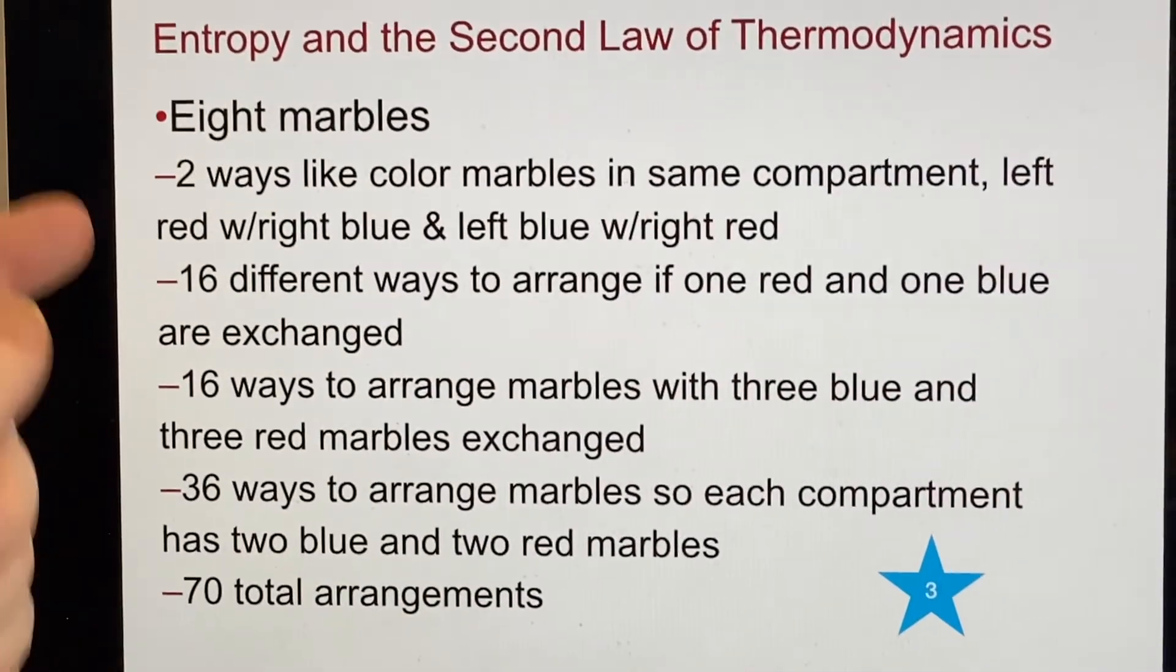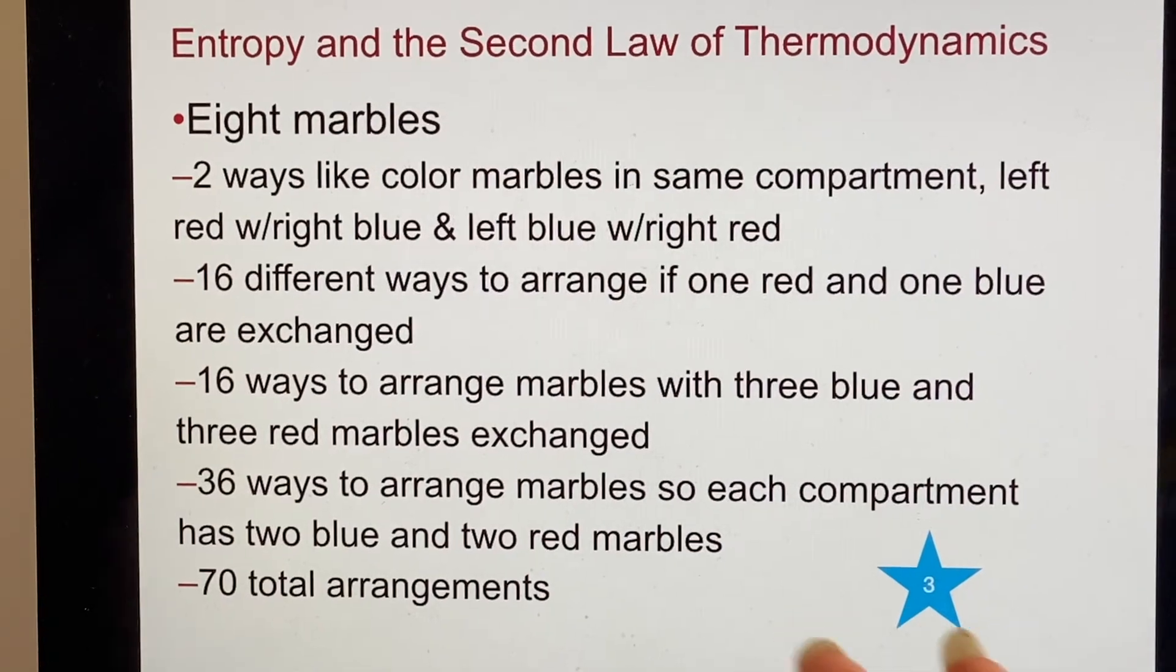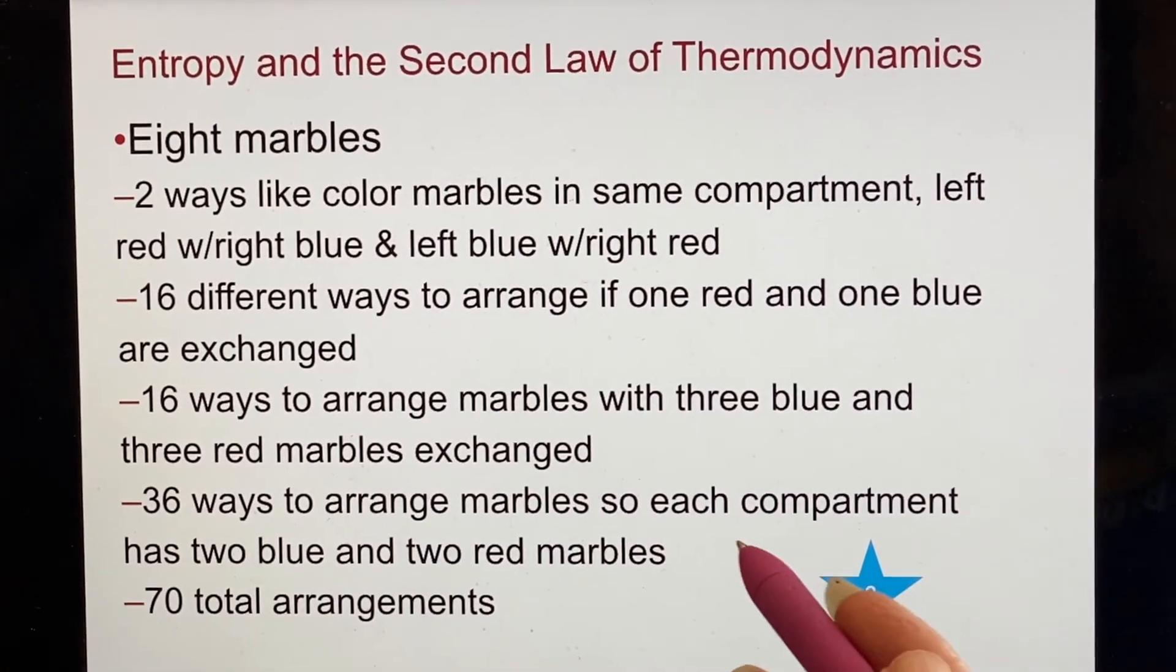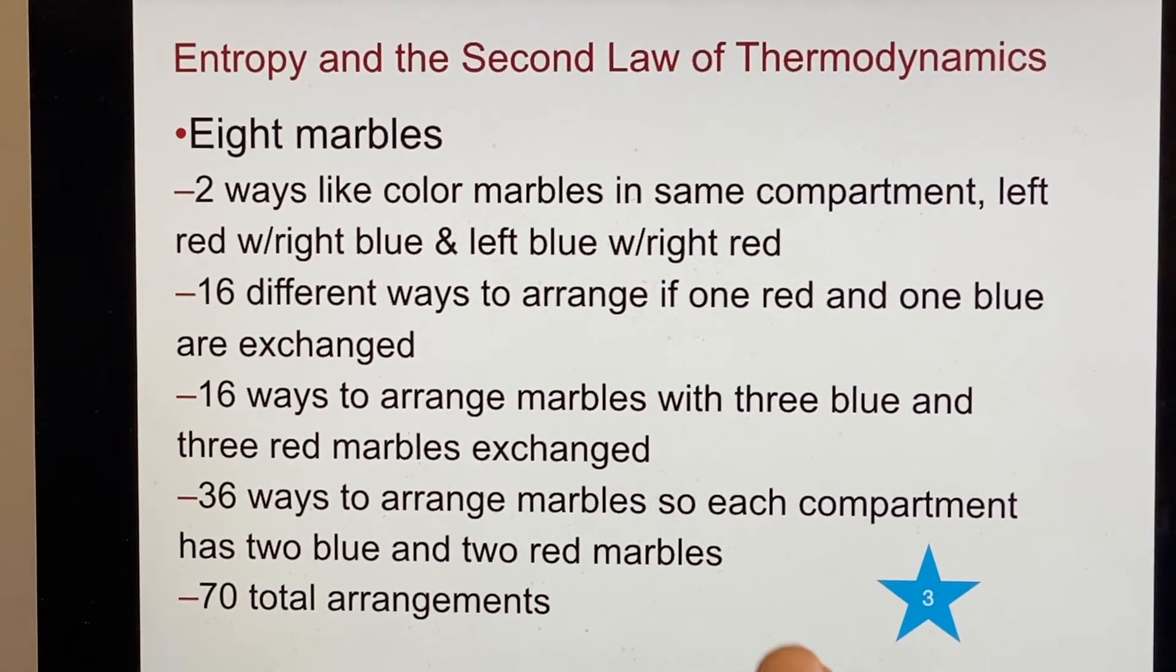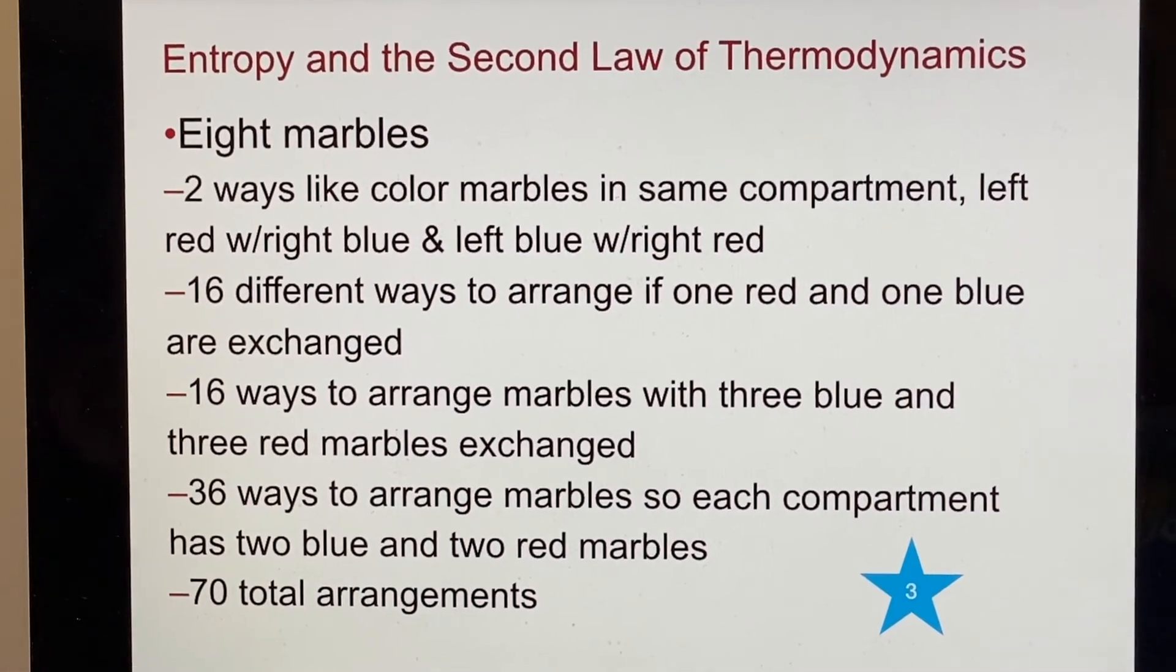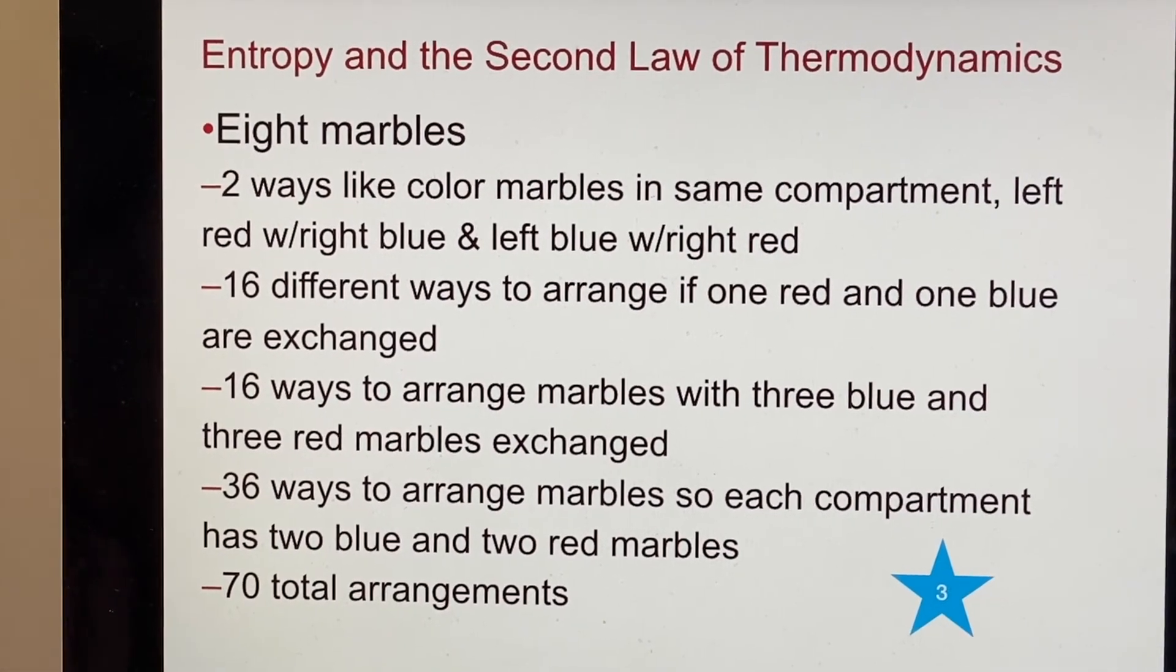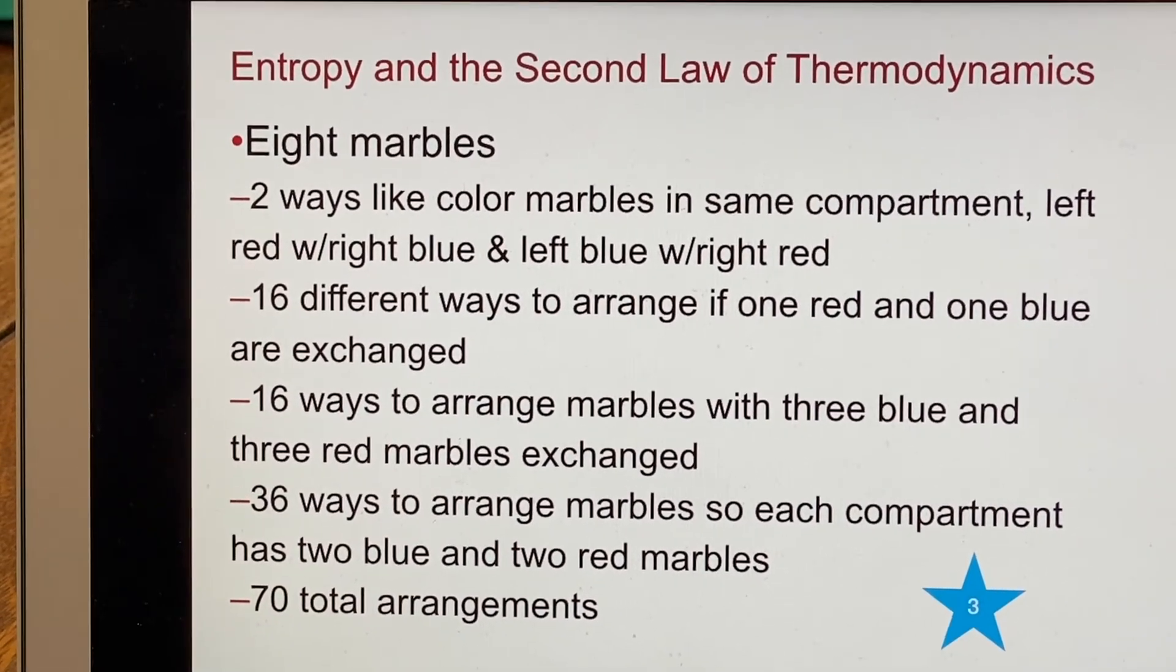And then if you're trying to come up with the total arrangements, then it's all of these added together, which gives you the 70. So you can see that has gone up quite a bit from what we said before, which was there were six total. Now we're up to 70, and we didn't add that many marbles. It's going up very rapidly.